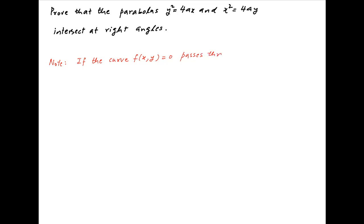We begin by noting that if the curve f equals 0 passes through the origin, then the tangent to the curve at the origin is obtained by equating the lowest degree terms in the equation of the curve to 0.